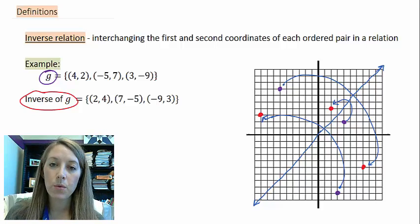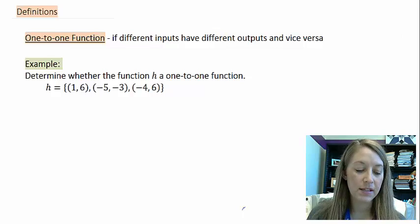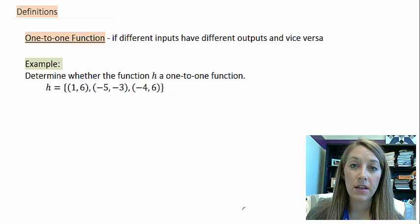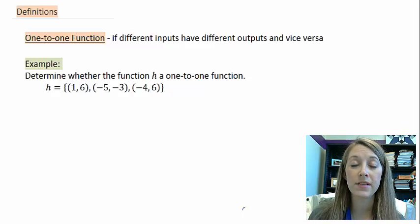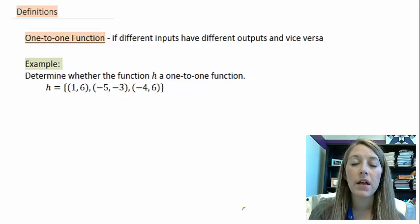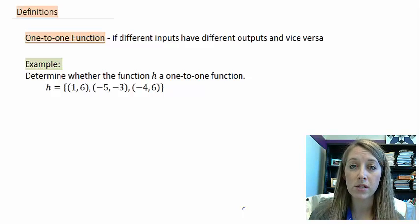Let's continue on with some more definitions. The next definition is a one-to-one function. The informal definition is: if different inputs have different outputs, and vice versa — meaning different outputs also have to have different inputs. So each input has to have its own unique output, and each output has to have its own unique input. If there's ever any duplication across the board, then our function is not one-to-one.